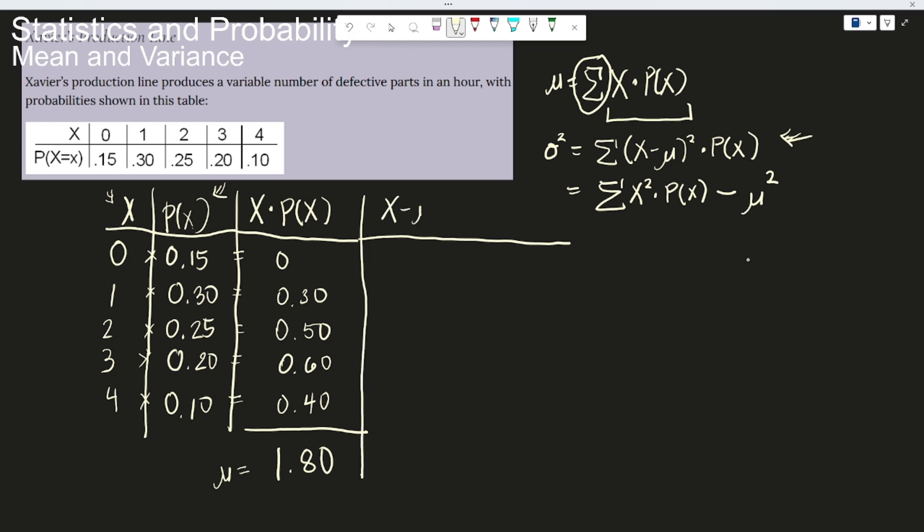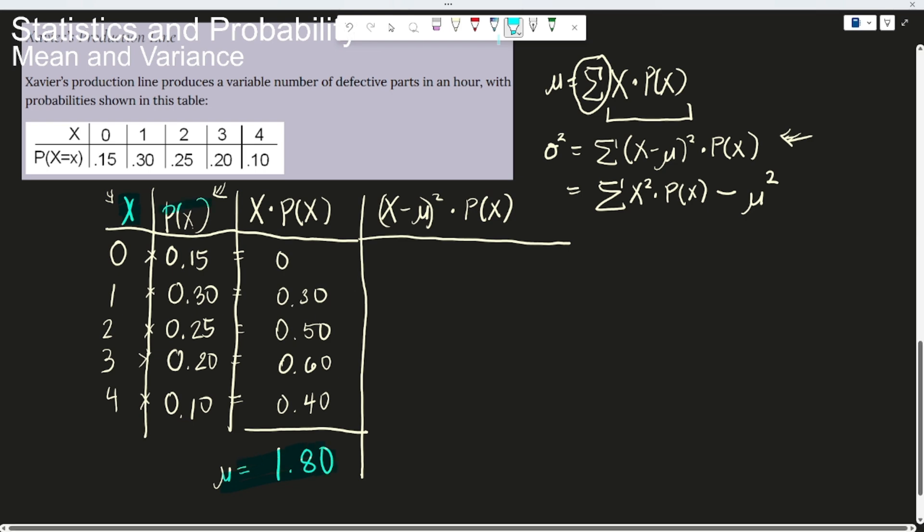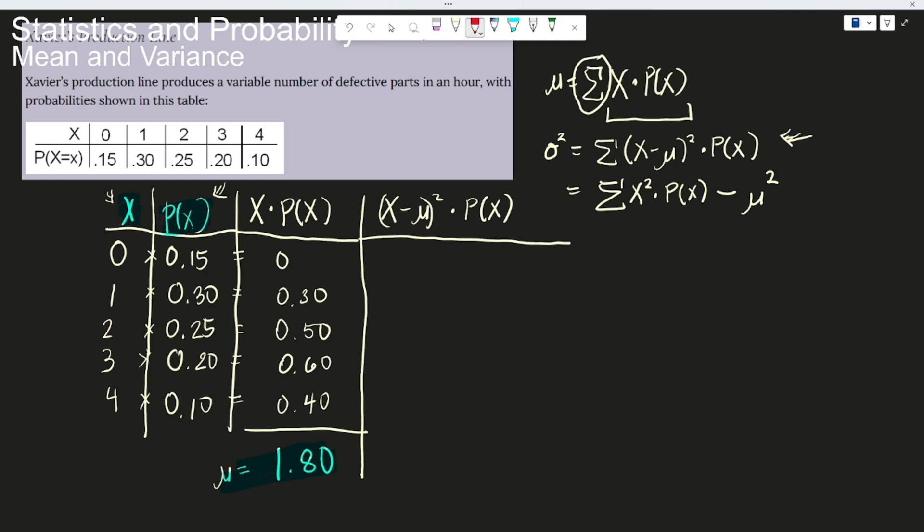That is x minus mu squared times p of x. So let's just substitute these. x, mu, and then p of x. Okay? So these are the elements that we have. So the x first. What are our x values? We have zero, one, two, three, four.